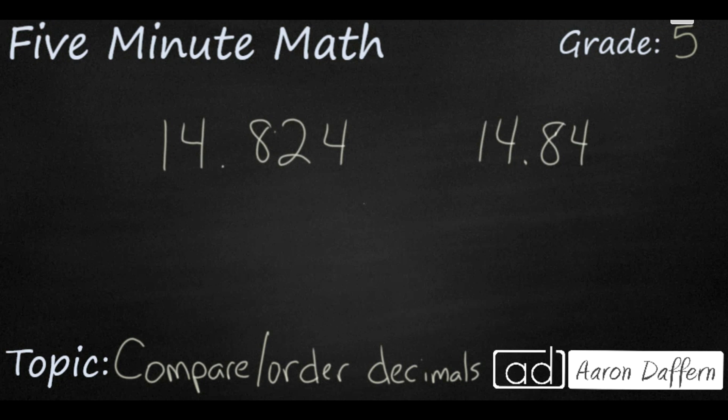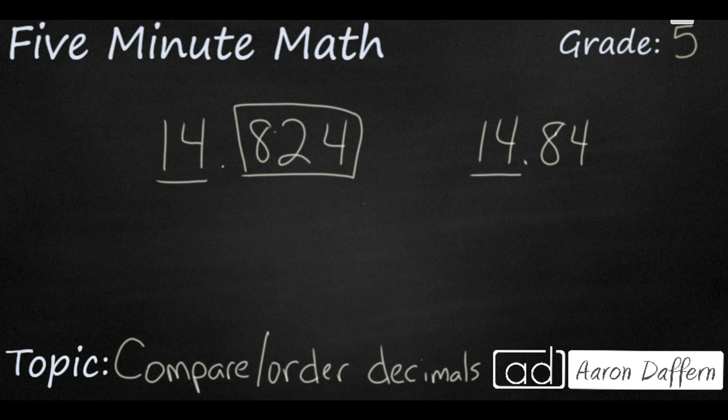Here's another example. At first glance it looks like the number on the left is going to be much larger because they both have 14 as whole numbers here. But the number on the left has 824 after the decimal. But once again you can't really compare 824 and 84 because they don't go to the same decimal place. The 4 here goes to the thousandths place. And this 4 here only goes to the hundredths place.